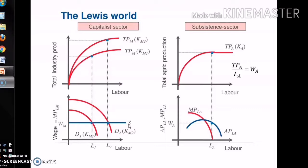This surplus is further reinvested and production again expands in the industrial sector. Both employment and output increase in the manufacturing industrial sector. The increased profit is again reinvested. This process continues, giving self-sustained growth until the surplus labor is fully absorbed in the new industrial sector.